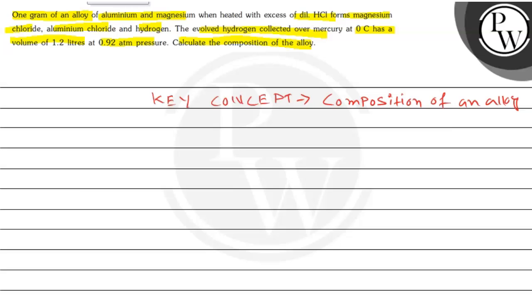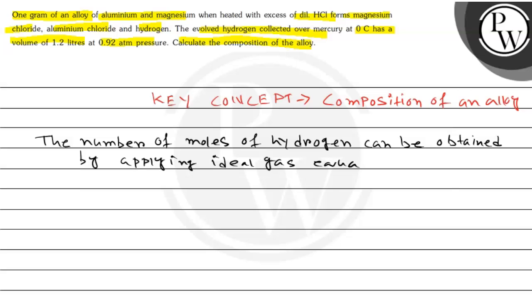We can write that the number of moles of hydrogen can be obtained by applying ideal gas equation. PV is equal to nRT, where P is the pressure, V is the volume, n is the number of moles, R is the universal gas constant, and T is the temperature in Kelvin. Therefore, n will be PV by RT.